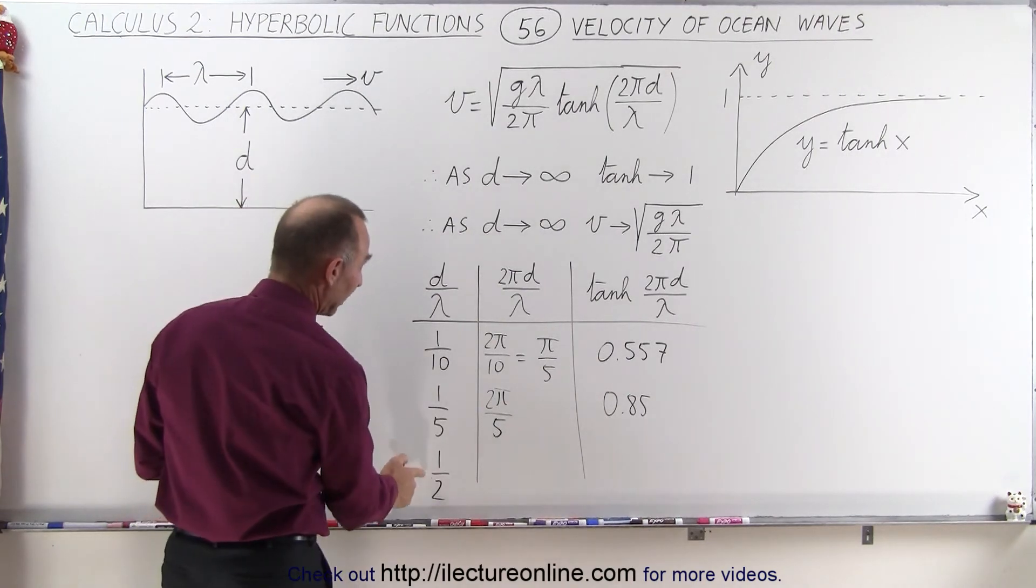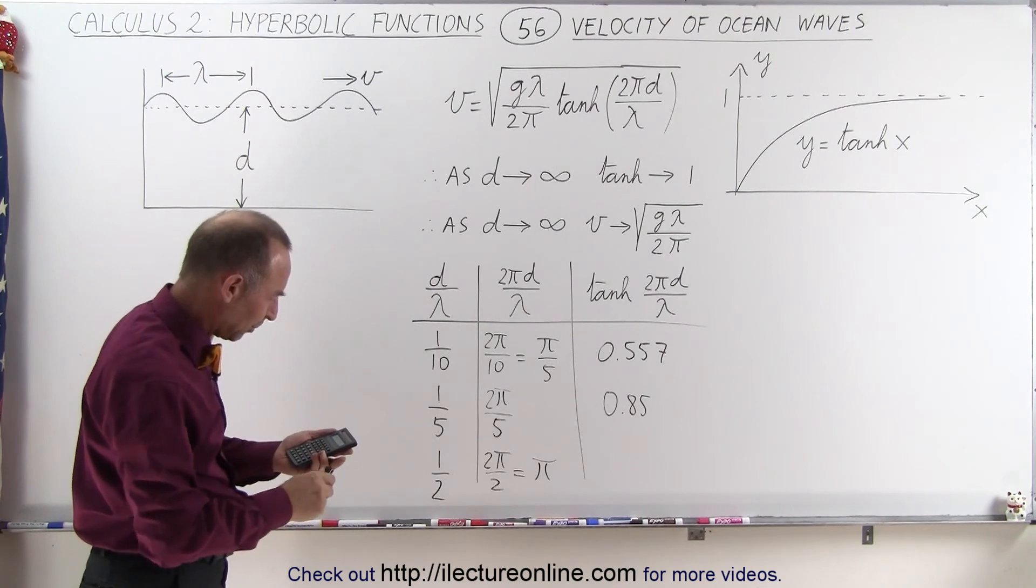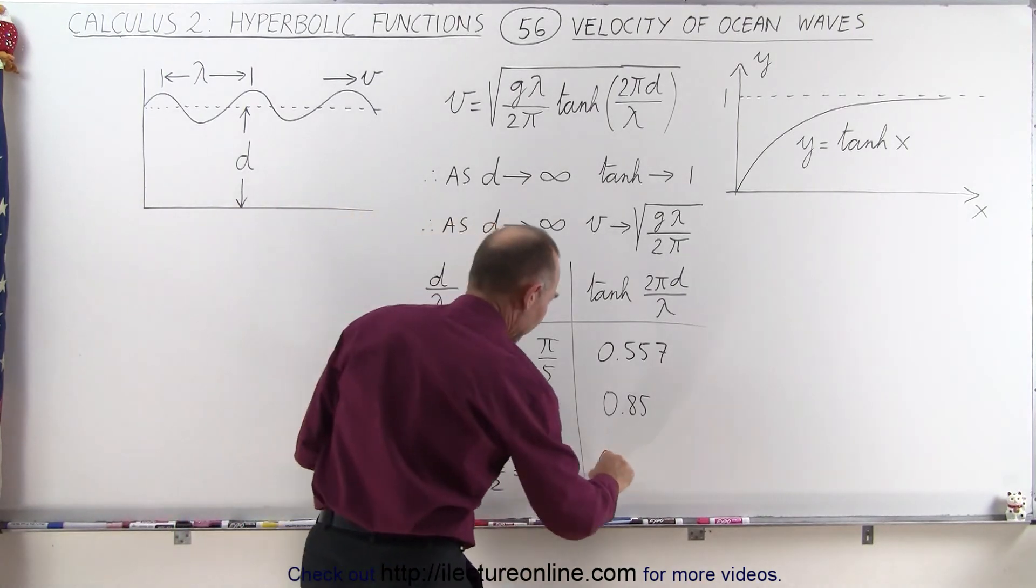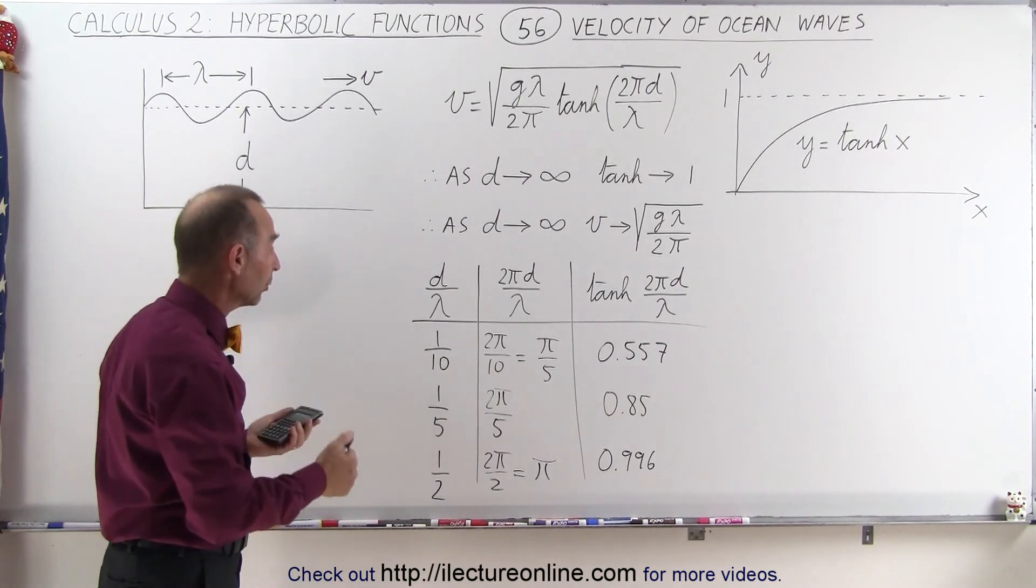And finally, if the depth is 1 half the wavelength, that would be 0.996, which of course is very close to 1.